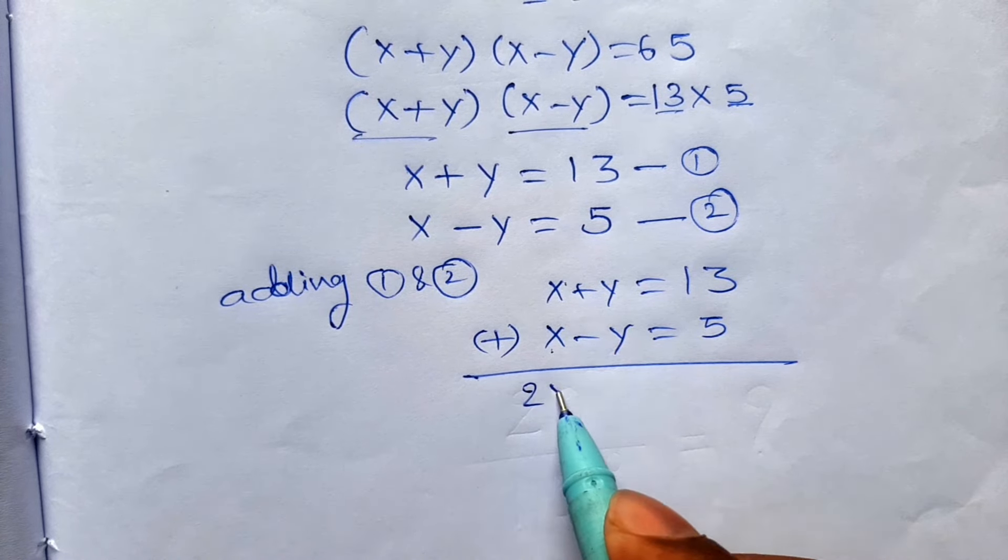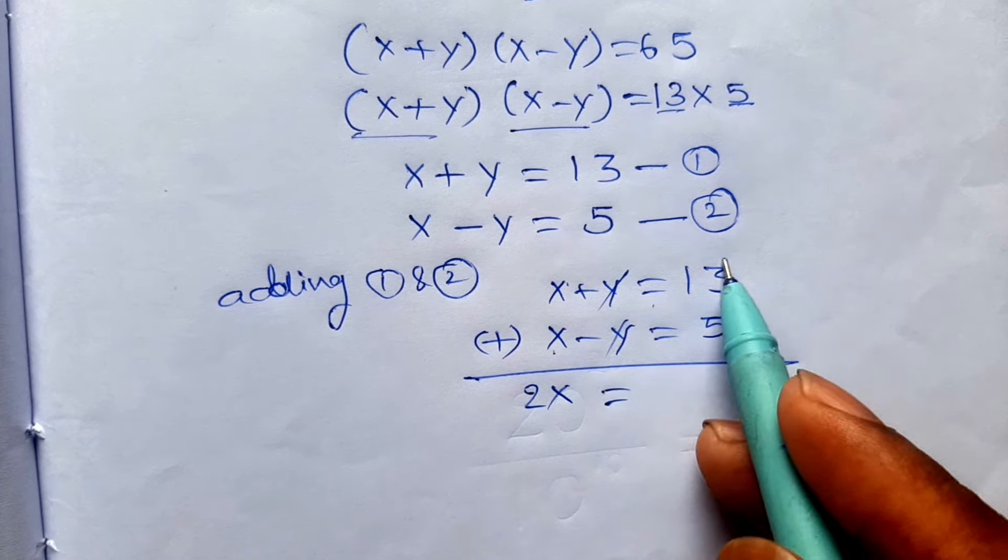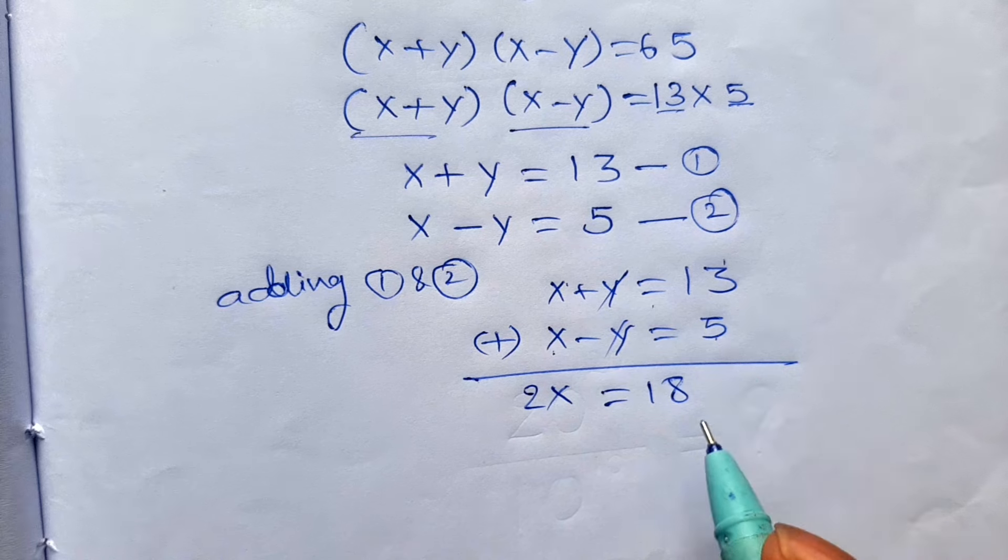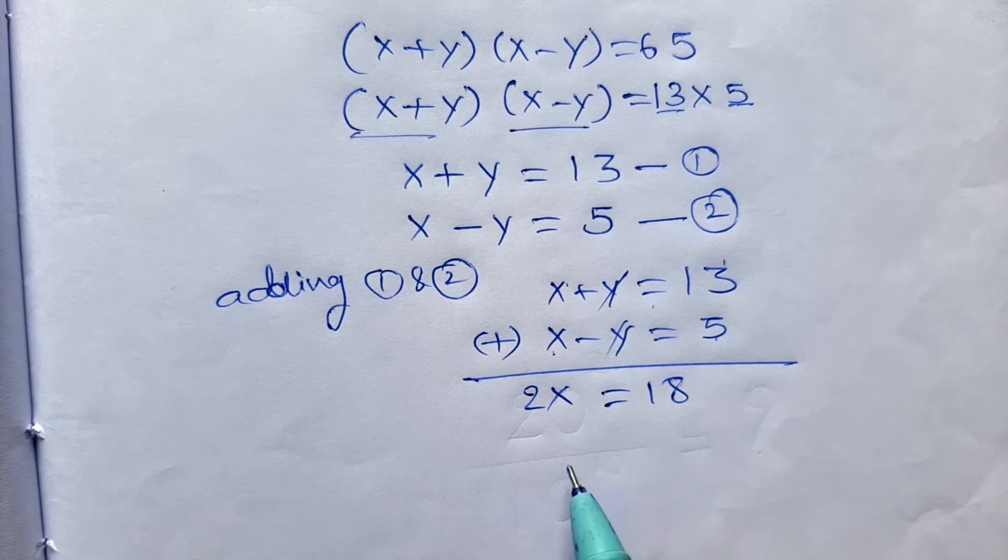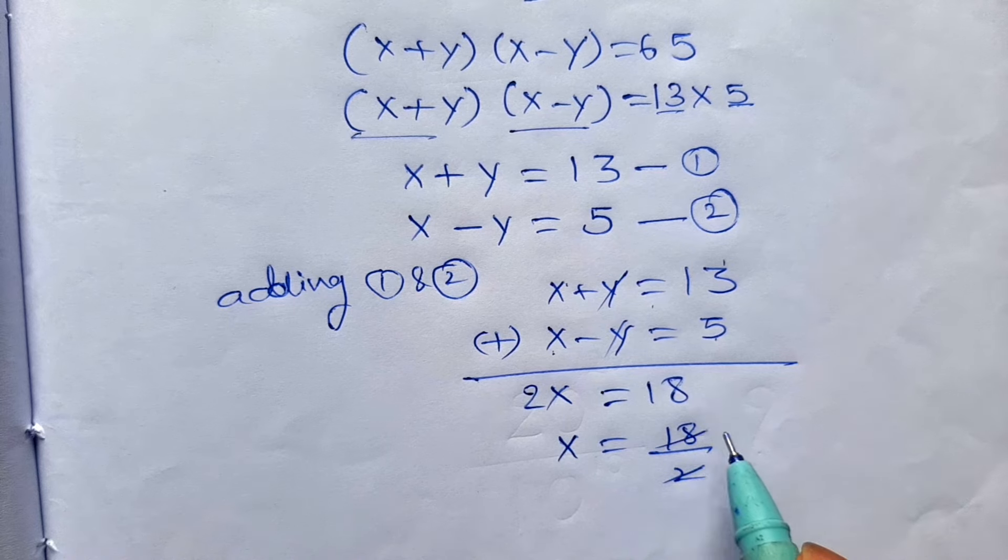After that, x plus y is equal to 13, x minus y equal to 5. Add the two equations, plus x plus x or 2x, plus or minus will be cancelled, is equal to that plus 5, that plus 5 is equal to 18. x is equal to 18 by 2, 2 divides 18, 9 times. Therefore x equal to 9.